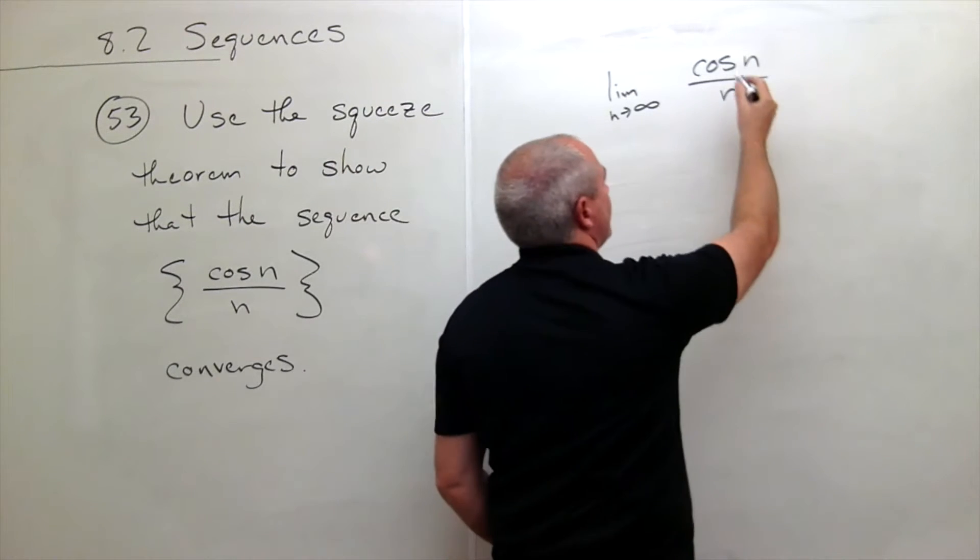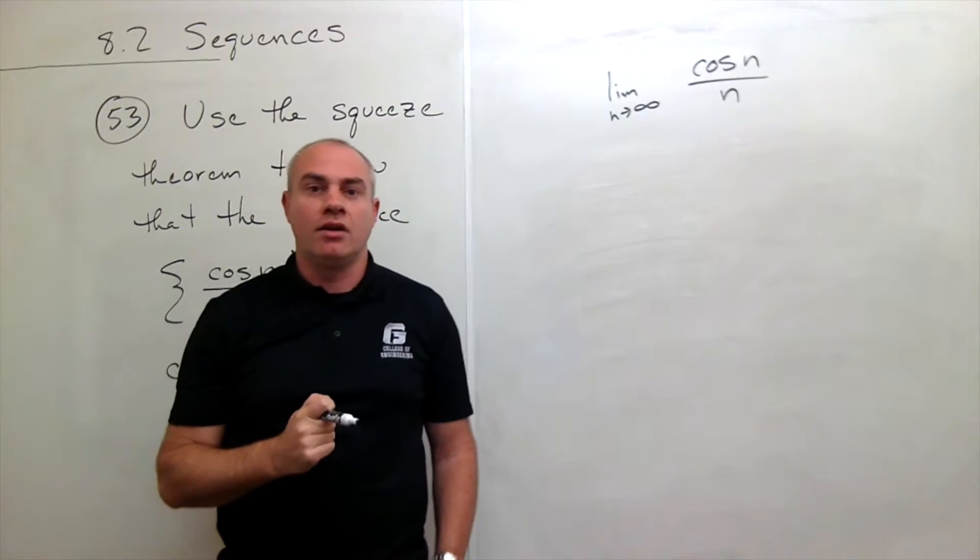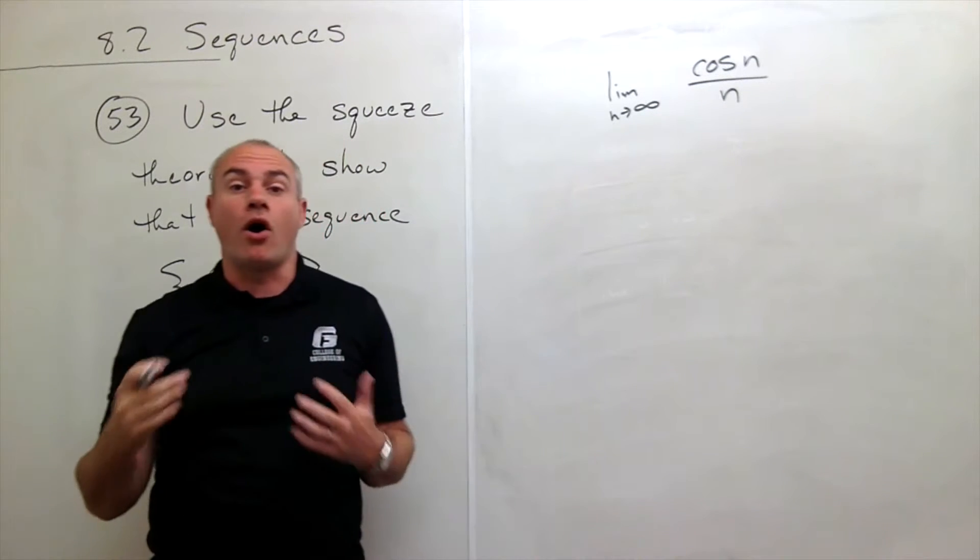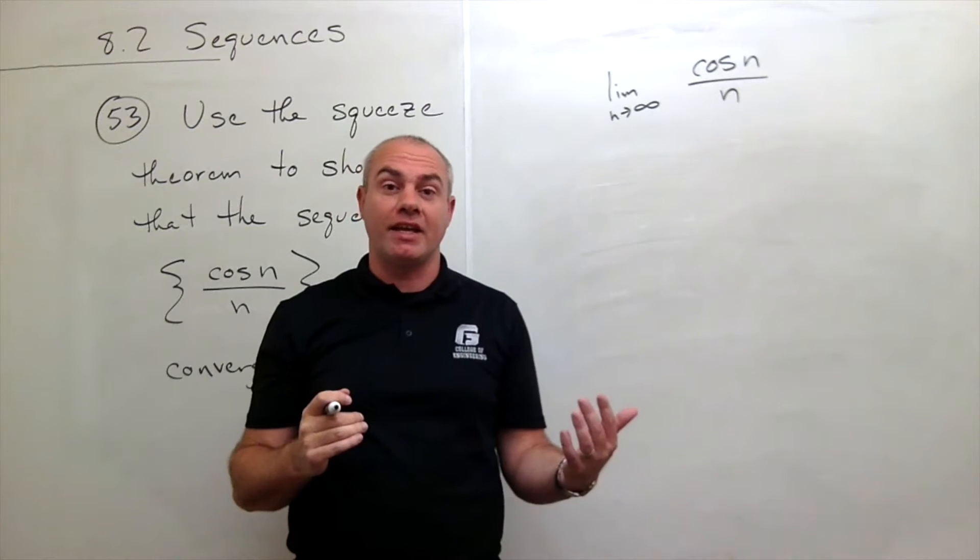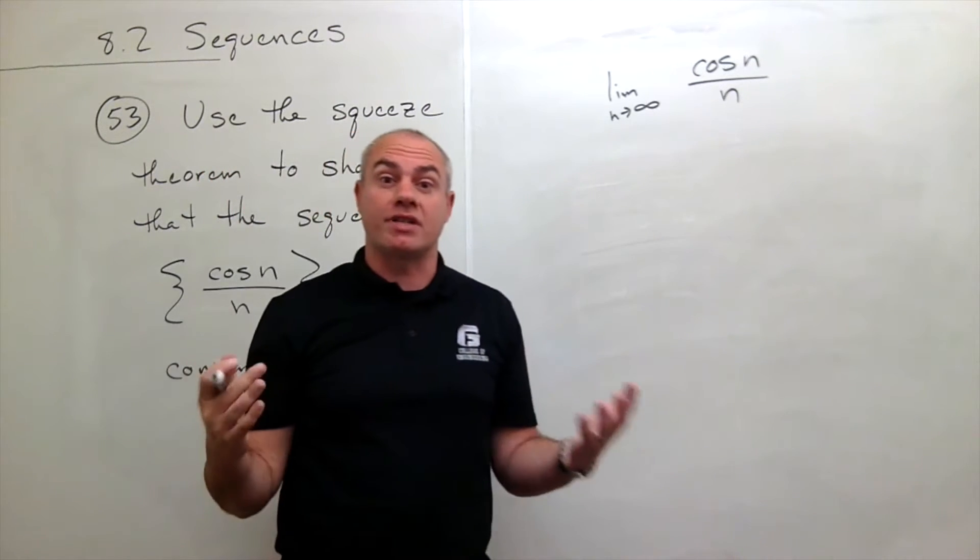And what I'm going to do is say, okay, what do I know about cosine of n? Well, I know that cosine always lives between negative 1 and 1. That's kind of where cosine lives.